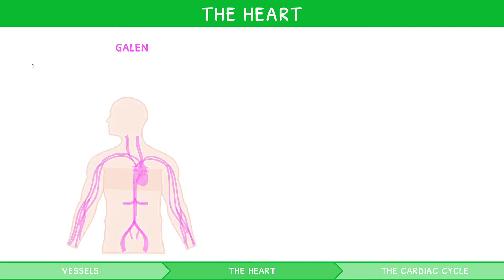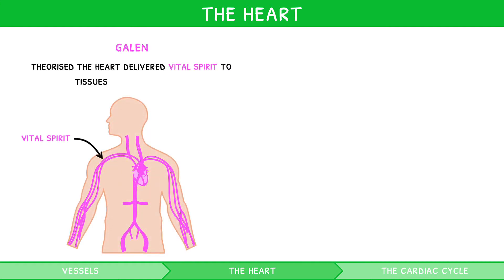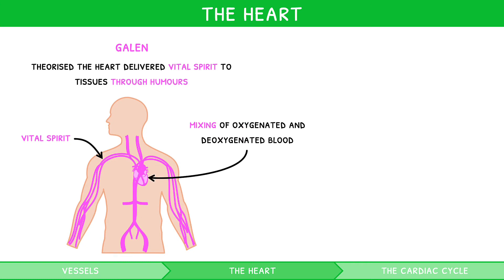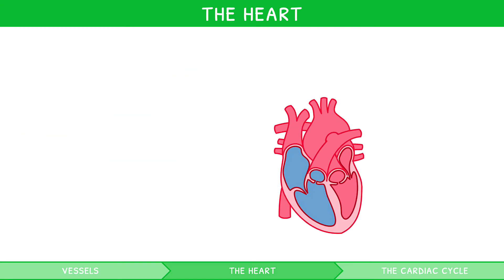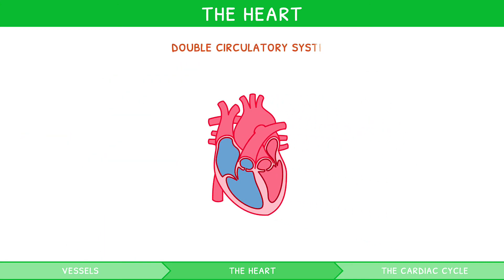The heart was first discovered by Galen, who theorised that it delivered a vital spirit to tissues through fluids called humours. He stated that oxygenated and deoxygenated blood mixed and flowed in the same vessels. Later, William Harvey, in conjunction with his work on blood vessels, replaced this theory by proving that the heart is a pump, with two sides that supply different areas of the body.